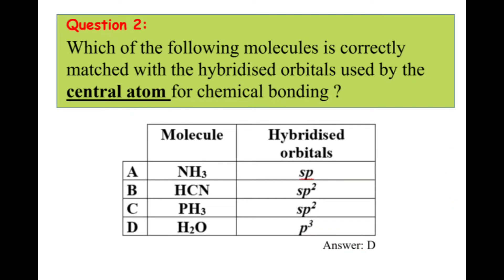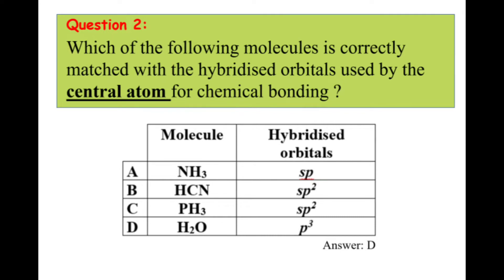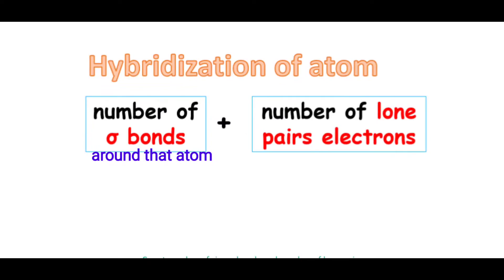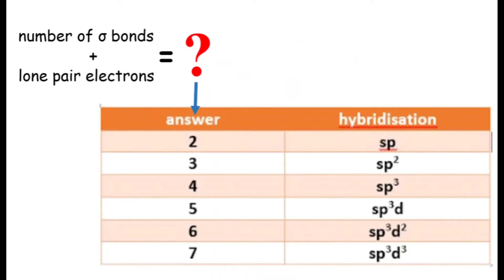Next, we go to question two. From the question, we need to determine the hybridization of the center atom for each of the following molecules. In order to determine the hybridization of an atom, we only consider the number of sigma bonds and the number of lone pairs around that atom. After we determine that number, we can get the type of hybridization by referring to the following table.